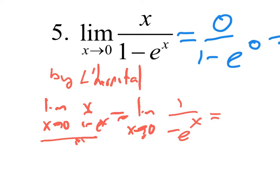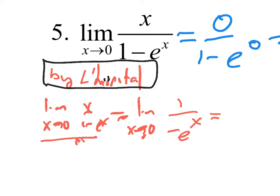On the free response, it helps them understand not only do you know what to do but why — you're not just a trained monkey. By L'Hôpital, I can plug in zero now: 1 over negative e to the zero, which is 1 over negative 1. Final answer: negative 1. Checking the answer key — we're right.